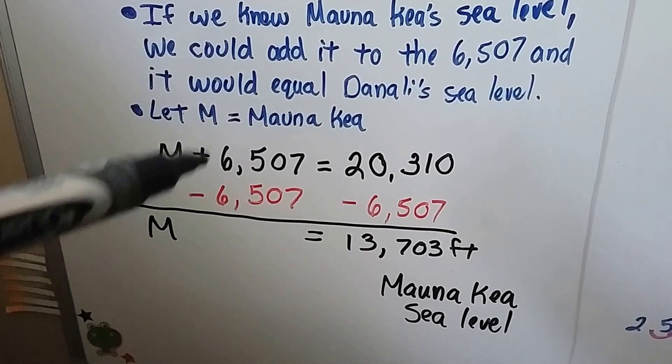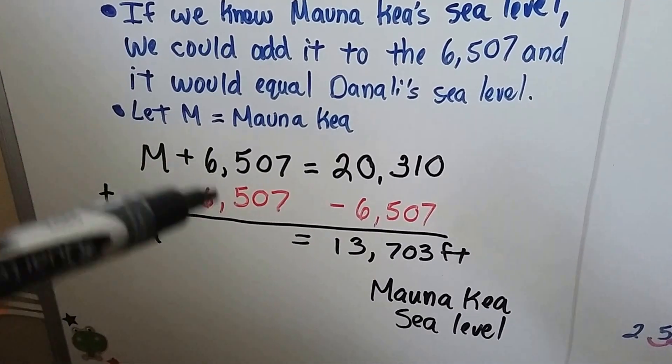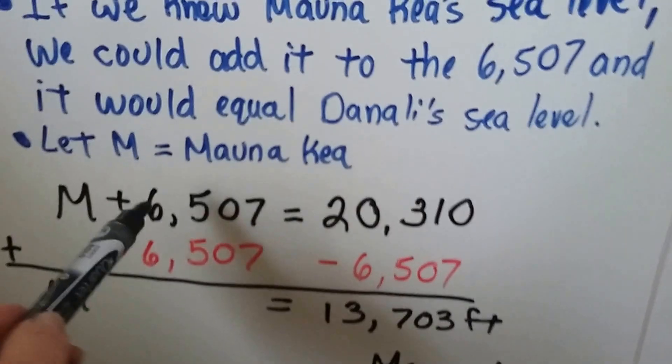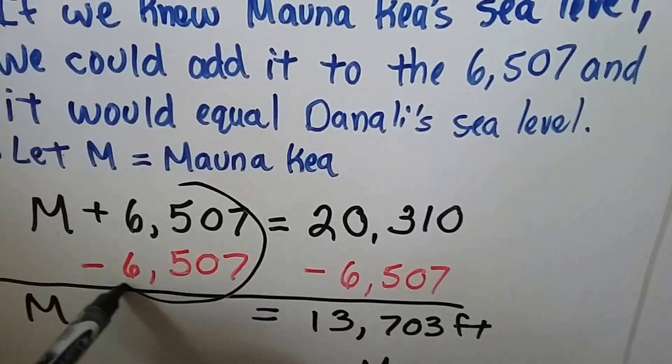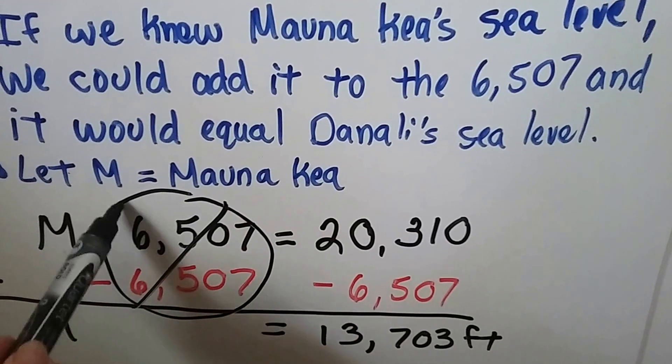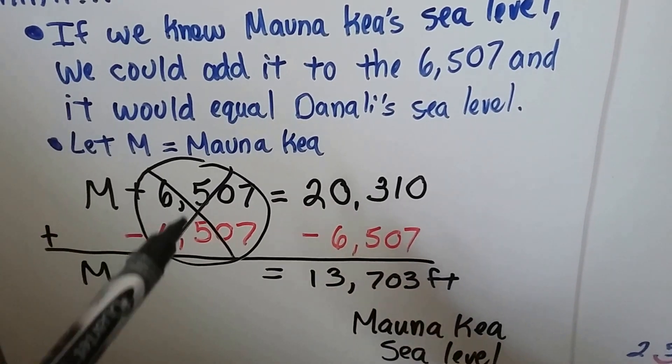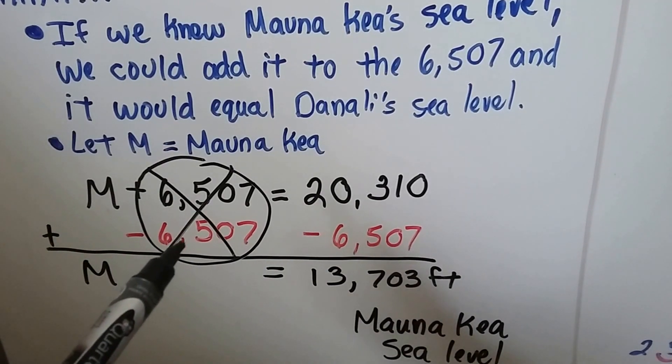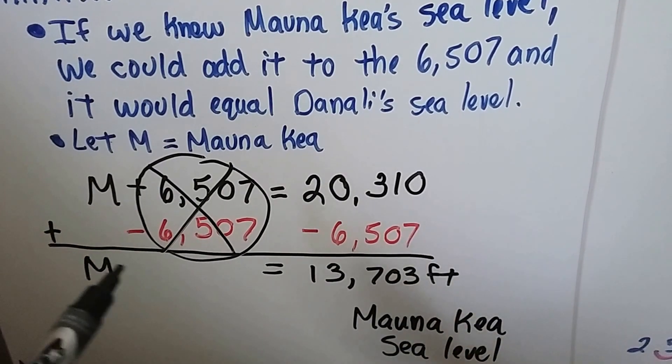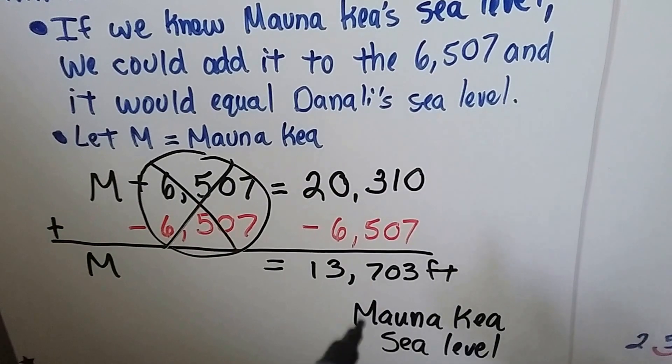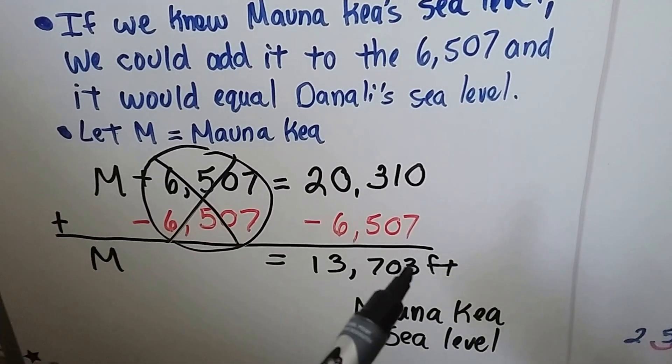When we put a negative 6,507 here, we create a zero pair, don't we? And this cancels out. We've eliminated it. If we have a positive 6,507 and we add a negative 6,507, it makes a zero. We do the subtraction on this side and we get 13,703 feet.